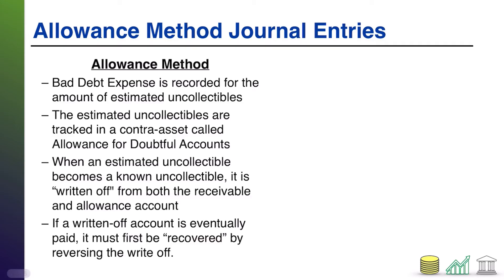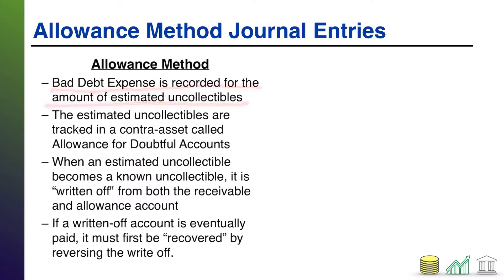What is the allowance method? How does it work? Where does the name come from? Under the allowance method, whenever a company estimates that a certain amount of its receivables are uncollectible, it is required to record bad debt expense. You're going to have a journal entry with bad debt expense as the debit.